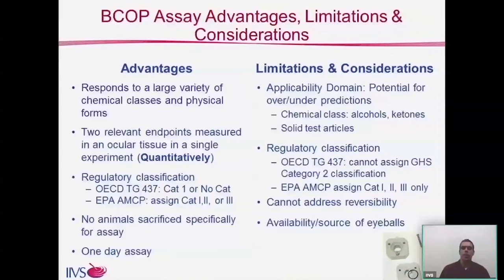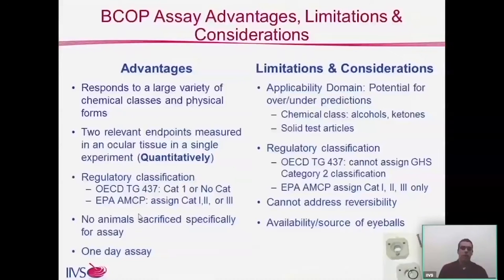The BCOP assay has several advantages. Like EpiOcular, it responds to a large variety of chemical classes and physical forms — viscous materials, solids, and liquids can all be applied. It has two relevant quantitative endpoints measured in a single experiment: the permeability and opacity endpoints. These are quantitative, as opposed to the subjective nature of the Draize assay. OECD Test Guideline 437 allows for Category 1 or no-category classification. Although the eyes are obtained from cows, no animals are sacrificed specifically for the assay — they are a byproduct from the meat industry. It is also a fairly quick assay, completed within one day.